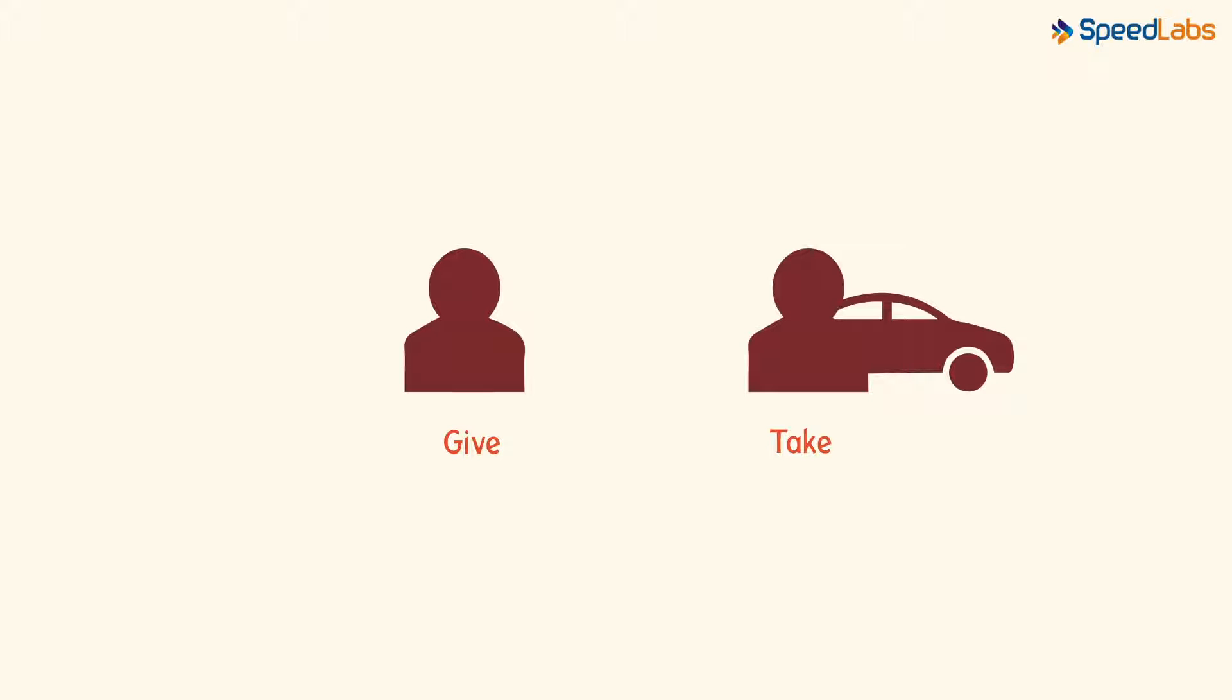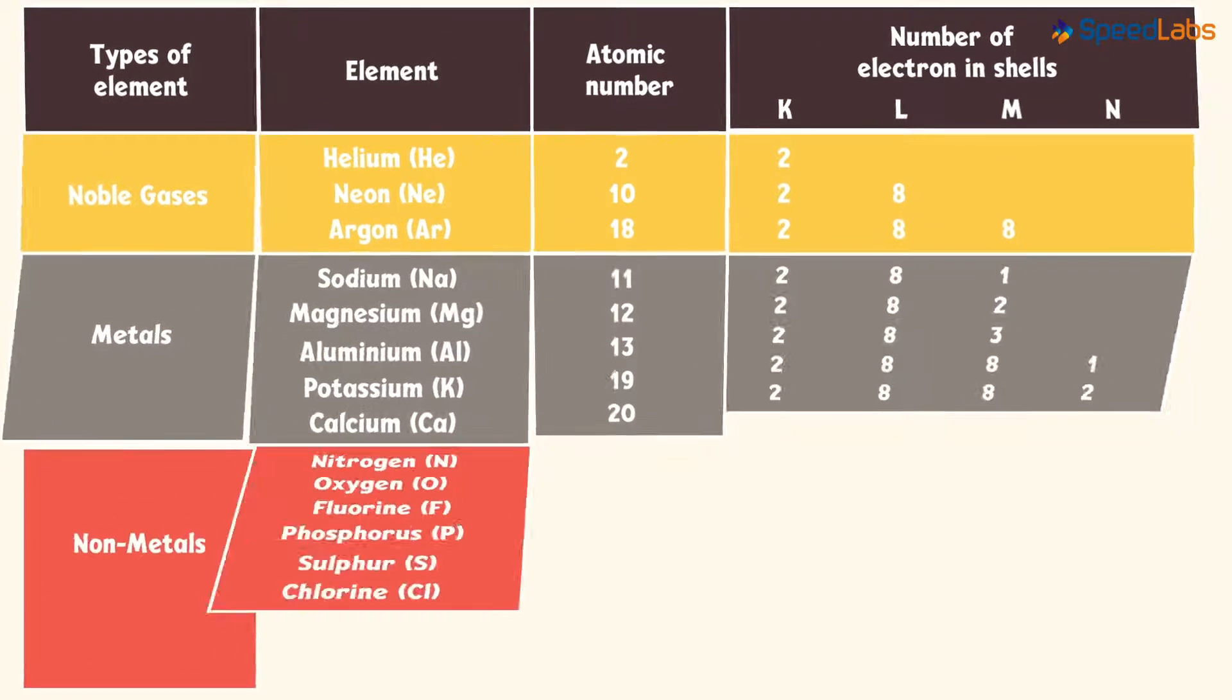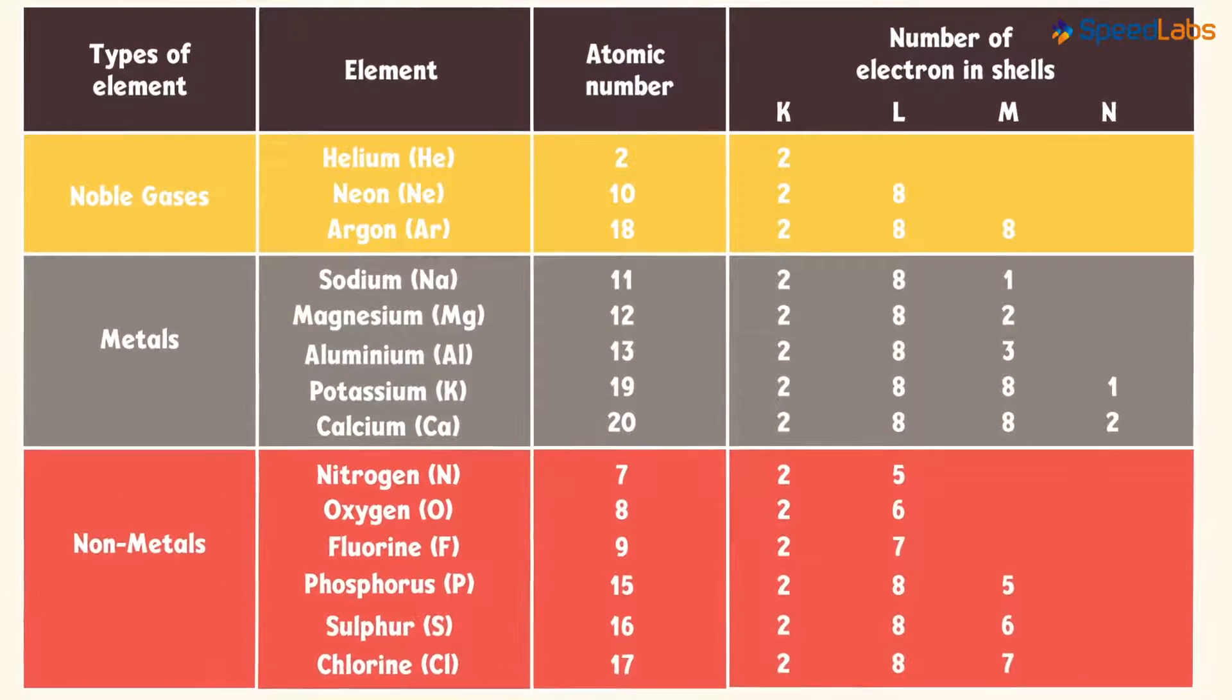Let's understand this in a bit more detail. Here's a table of electronic configuration of some of the elements. I want you to pause the video and have a good look at this table. What I want you to notice mainly is the number of electrons in the valence shell of these three categories of elements.